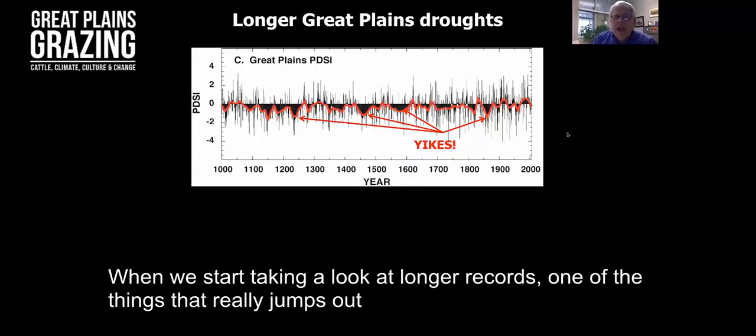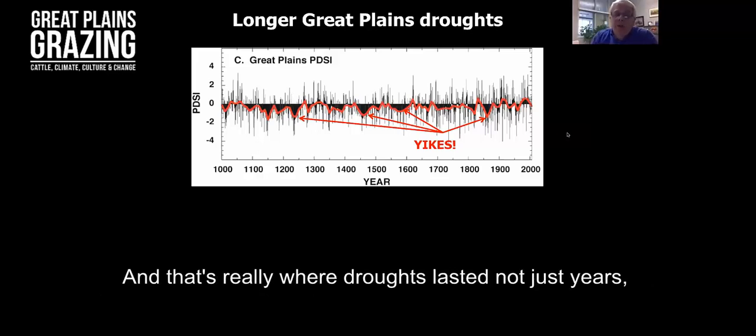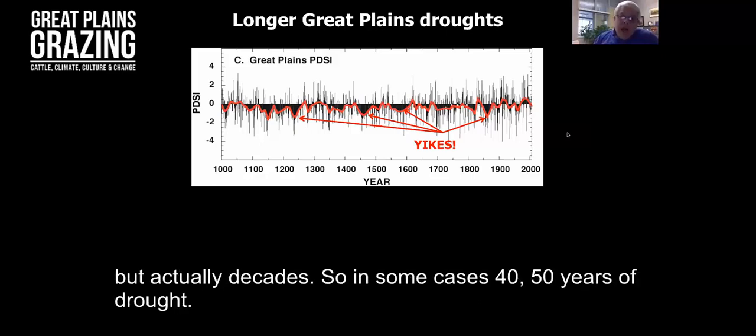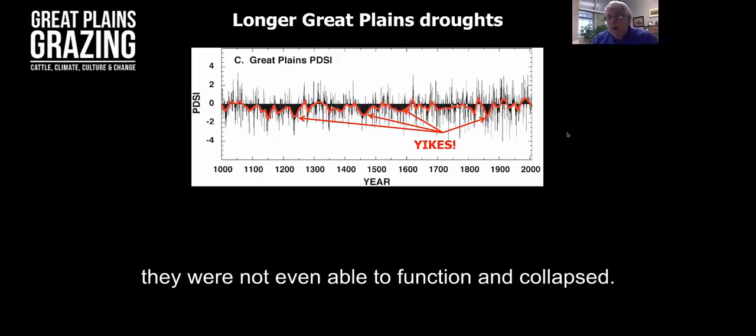When we start taking a look at longer records, one of the things that really jumps out is that there were some what's called mega droughts. That's really where droughts lasted not just years but actually decades, in some cases 40-50 years of drought. This is where some of the Indian cultures that were highly adapted to drought, they were not even able to function and collapsed.